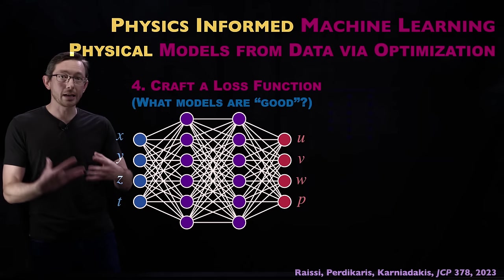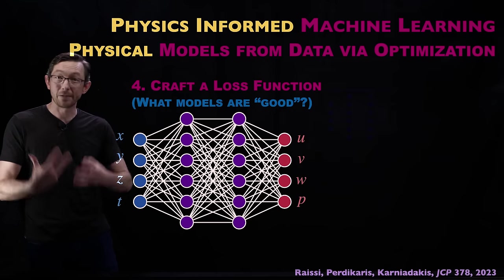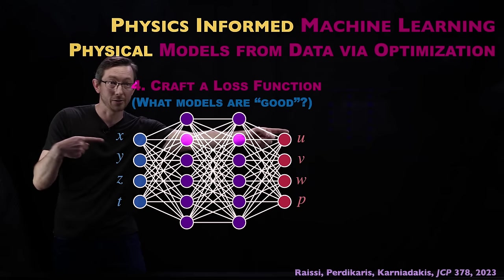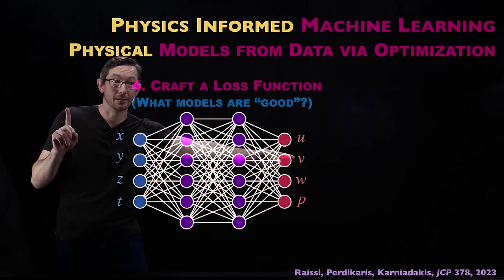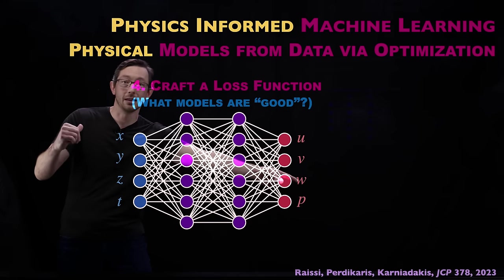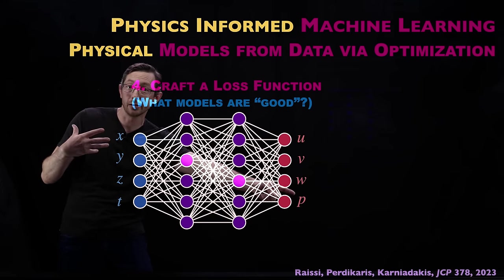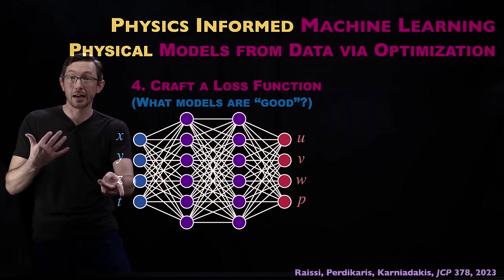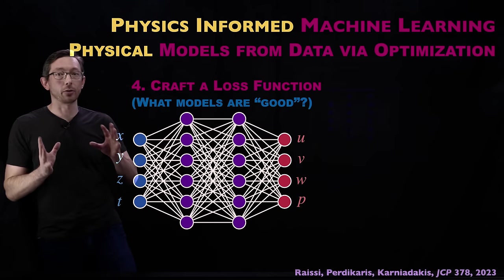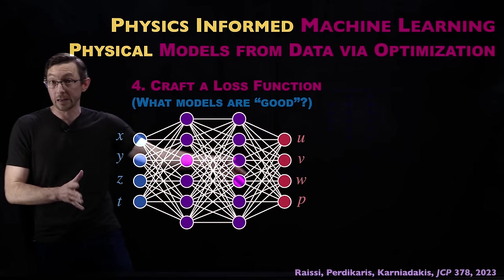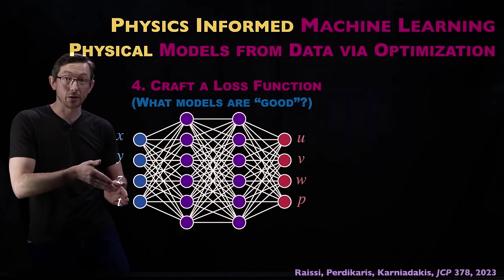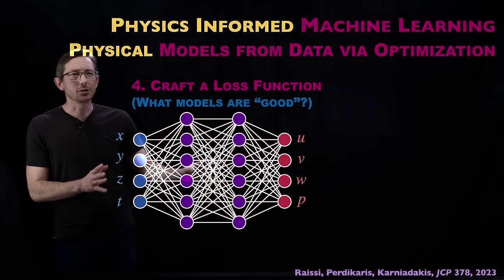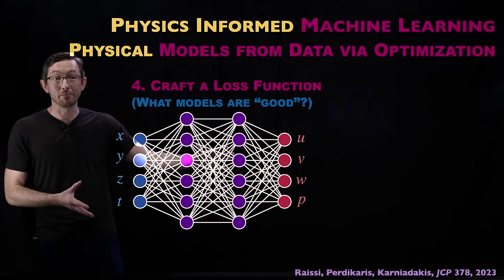The basic idea: if I'm trying to build a machine learning model to predict some physical quantity like a fluid velocity field — with components u in the x direction, v in the y direction, w in the z direction, and a pressure field — these fields vary in space x, y, z, and time. The naive approach is just to build a big deep feed-forward network where inputs are spatial locations and the output is the fluid flow field at those space-time locations.